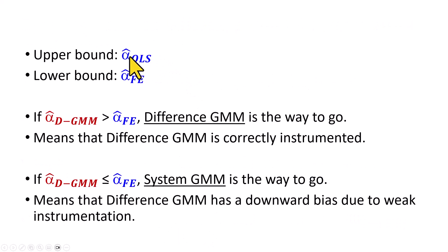And we do the same with fixed effects and with difference GMM. The coefficients from pooled OLS serve as the upper bound and that from fixed effects, the lower bound. If the coefficient estimates obtained using difference GMM is greater than that from fixed effects, then we estimate the model using difference GMM. Otherwise, we go with system GMM.